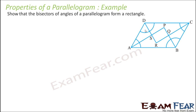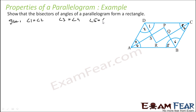Now for the next part, let me put numbers on the angles: this is angle 1, 2, 3, 4, 5, 6, 7, and 8. It is given that AS, DS, CQ, and BP are bisectors of these angles. So it is given that angle 1 equals angle 2, angle 3 equals angle 4, angle 5 equals angle 6, and angle 7 equals angle 8.